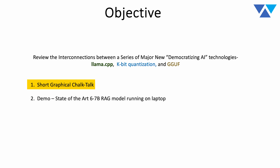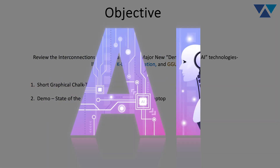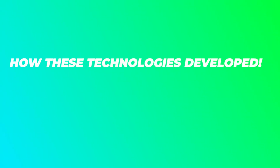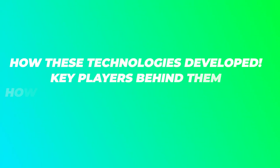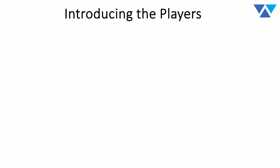We're going to talk about some really exciting new democratizing AI technologies. We're going to focus on llama.cpp, kbit quantization, and GGUF. We'll walk through how these technologies developed, the key players behind them, and how they fit together — and then use that to motivate and set up the new capabilities that have been brought into LLMware before getting into the live demo.